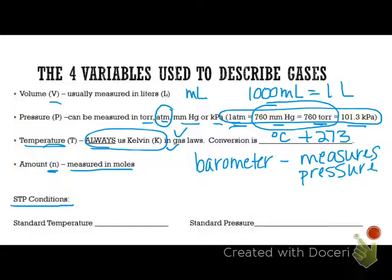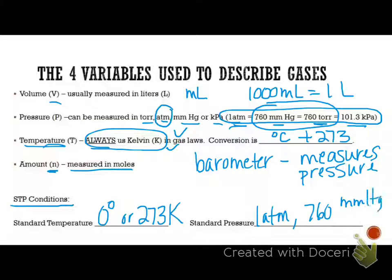Something we need to be aware of when we're talking about gas laws is it can be at standard temperature and pressure. Standard temperature and pressure is going to be 0 degrees Celsius, or 273 K. And standard pressure is going to be 1 atmosphere, also could be 760 millimeters of mercury or torr, and 101.3 kilopascal.